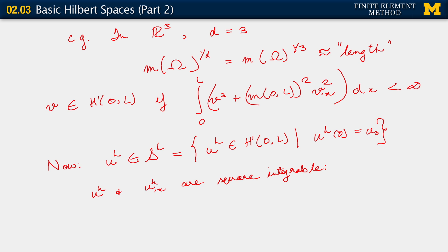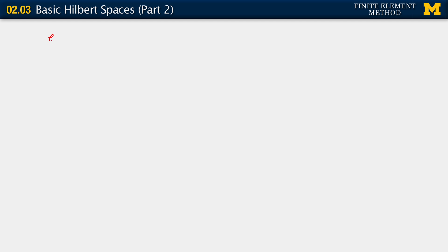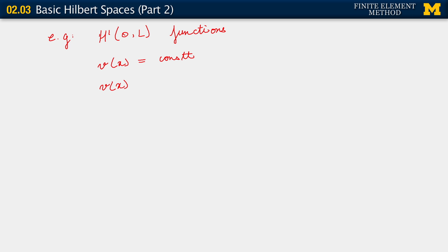Let's look at examples of H1 functions. If v of x equals a constant — no problem. If v of x equals the sum from k equals 0 to n of a sub k times x to the power k — a polynomial — that is also fine.